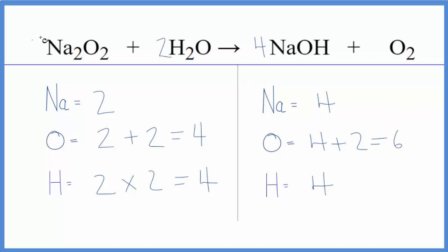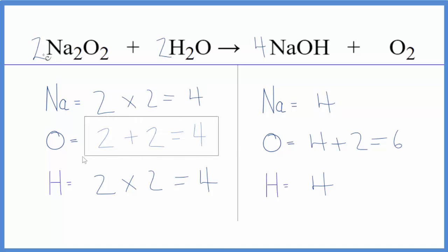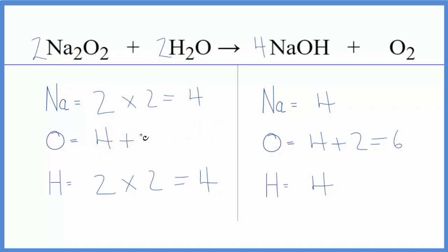If we put a two here in front of the sodium peroxide, let's see what that does. Two times two — that would balance the sodium atoms. Let's update the oxygen: two times two is four, plus two times the one is two, and we get six. And finally, this equation is balanced.